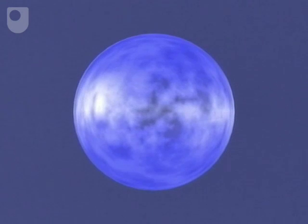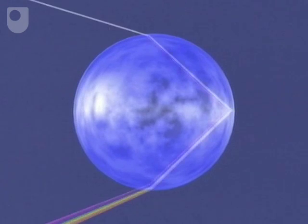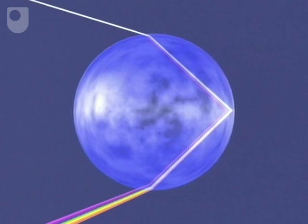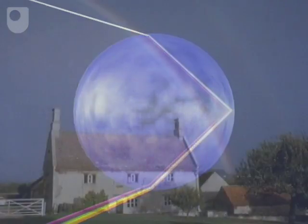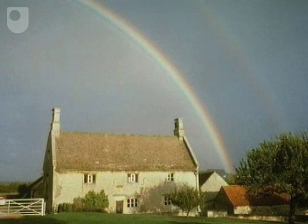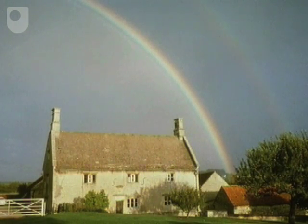Newton discovered that different colours are refracted slightly differently, and so explained the separation of the colours in the bows. And more recent work, using the wave model of light, has helped to explain the presence of the supernumeraries.